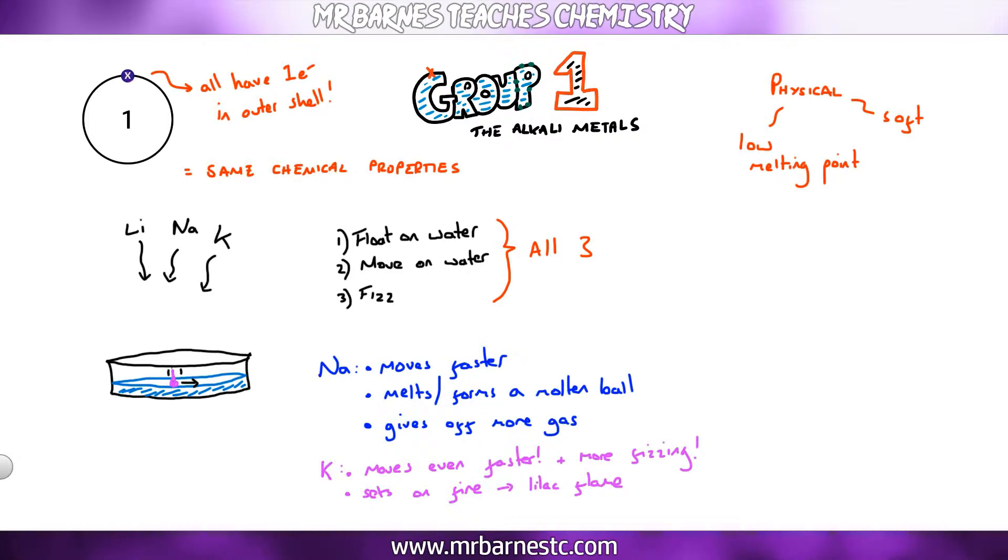Now from that you can work out the order of reactivity. Lithium is the least reactive because it only floated, moved, and fizzed. Sodium is the second most reactive because it moved faster, gave off more gas and formed a molten ball. Potassium is the most reactive because it set on fire.